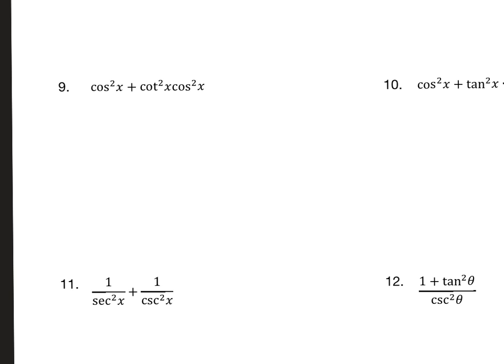For number nine, I see here that I've got one, two terms, and these two terms have a cos²x in common, cos²x, which means I can factor it out.